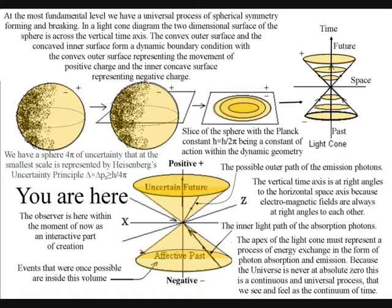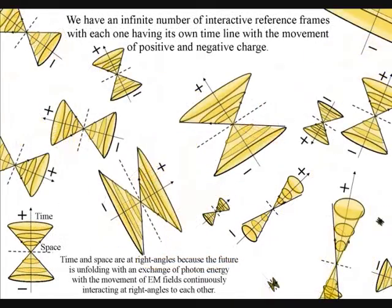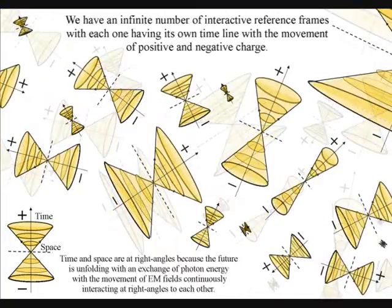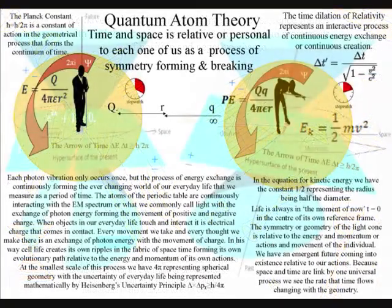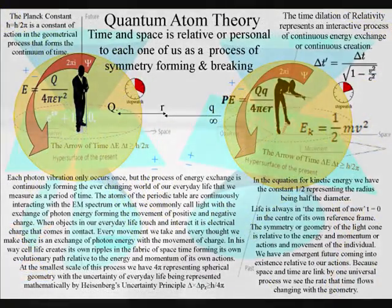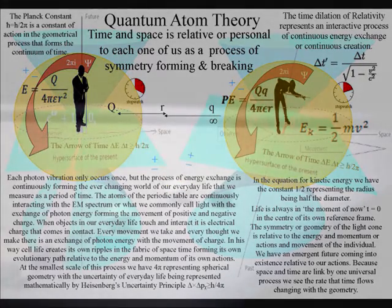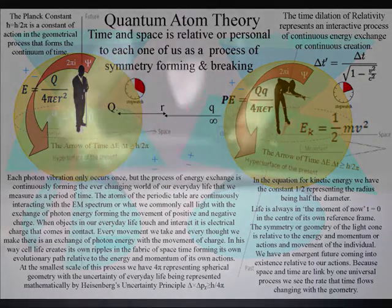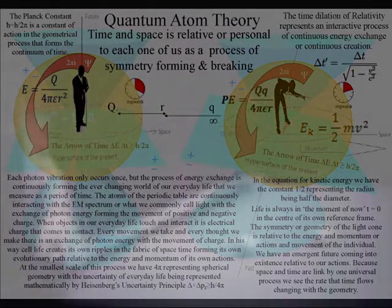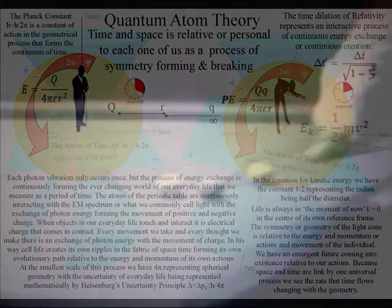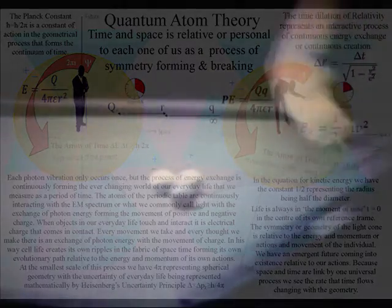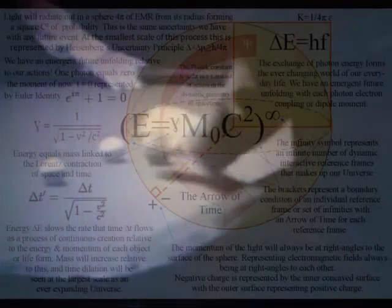This process is based totally on cause and effect. We have an infinite number of dynamic interactive reference frames that make up our universe that are continuously coming in and out of existence with each reference frame having a timeline from the past into the future. In such a theory the future would indeed come out of the present moment for each individual with the future unfolding relative to the energy and momentum of their actions.